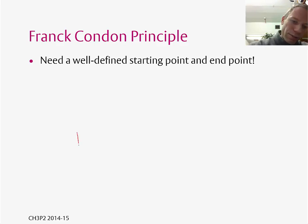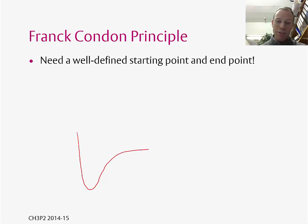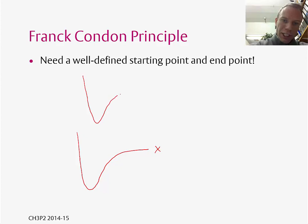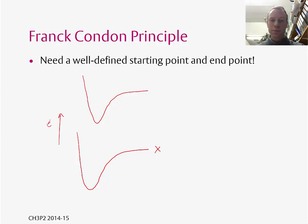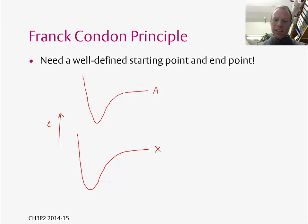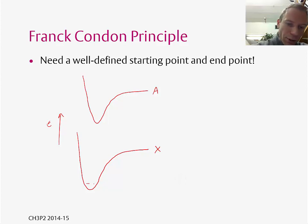If we now move to thinking about potential energy surfaces for atoms or molecules, we have to remember that we draw vertical lines on these diagrams too. So if we're going to have a vertical transition, we need a well-defined starting point and end point. If I draw a potential energy curve for a molecule in the ground state — let's call this state X — and then another potential energy curve for an excited state — let's call this A — within each electronic state we've got a number of vibrational states, starting widely spaced and then getting closer and closer together.